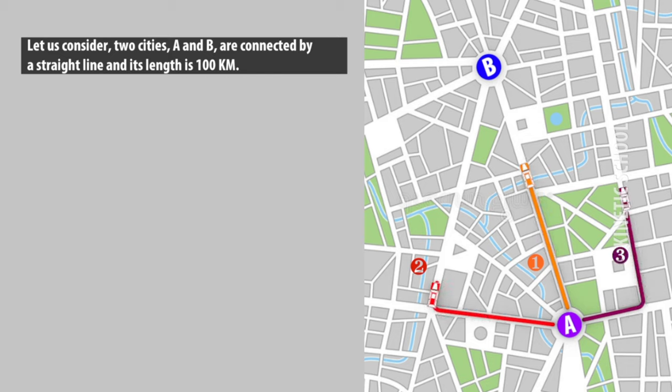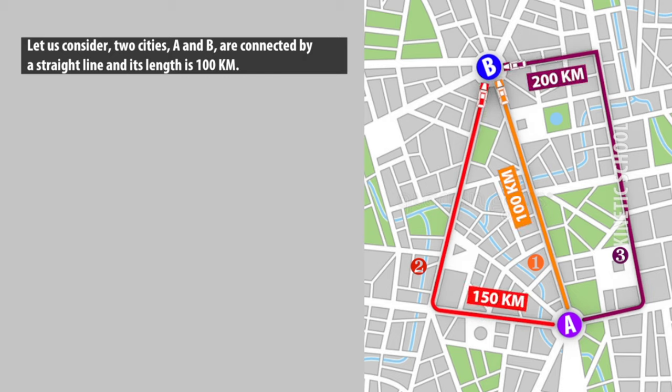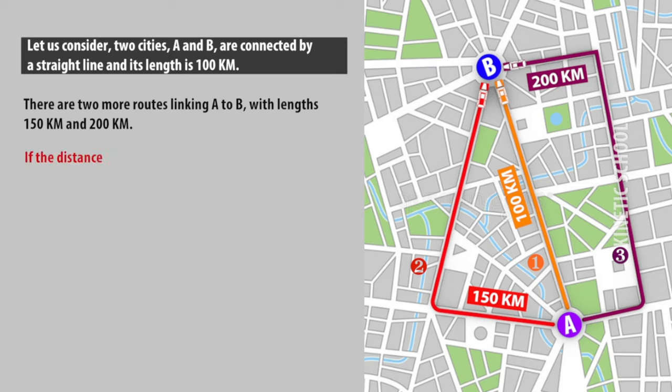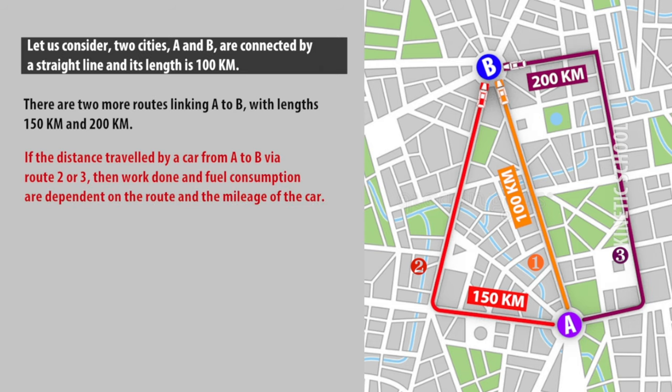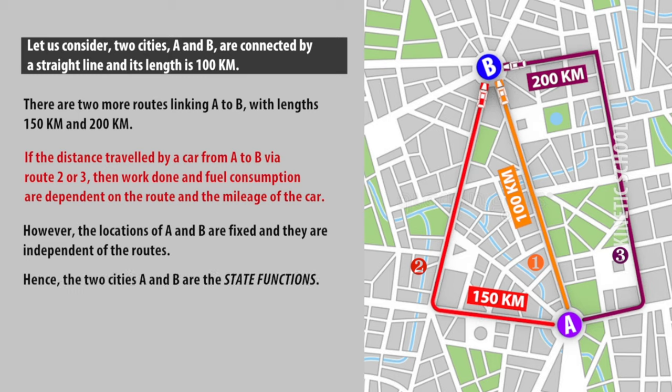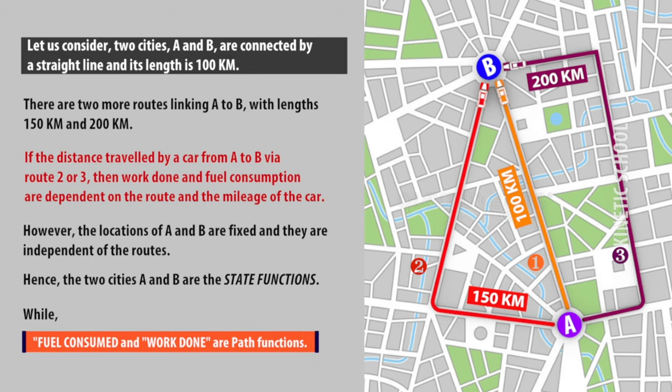Let us consider two cities A and B connected by a straight line with length 100 km. There are two more routes linking A to B with lengths 150 km and 200 km. If the distance traveled by a car from A to B via route 2 or 3, then work done and fuel consumption are dependent on the route and the mileage of the car. However, the locations of A and B are fixed and independent of the routes. Hence, the two cities A and B are state functions, while fuel consumed and work done are path functions.